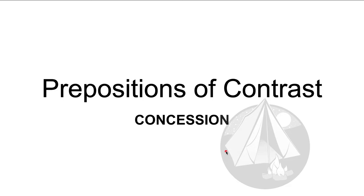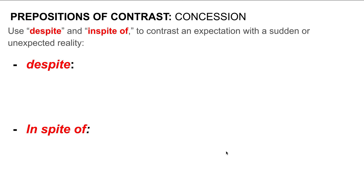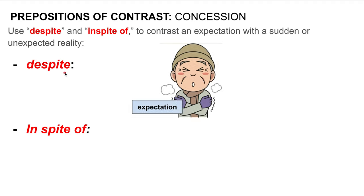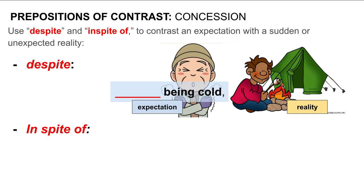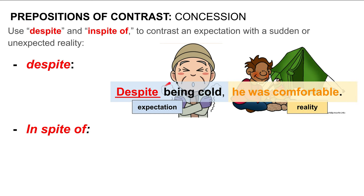Let's look at prepositions of contrast focusing on concession. These are prepositions of concession. Use despite and in spite of to contrast an expectation with a sudden or unexpected reality. For example, despite — here is our expectation: the man is cold. Being cold, he was uncomfortable. Our expectation is that if he's cold, he's uncomfortable. The reality is that it's not the case — he's not uncomfortable, he is comfortable. Therefore, despite being cold, he was comfortable. That's our unexpected reality.